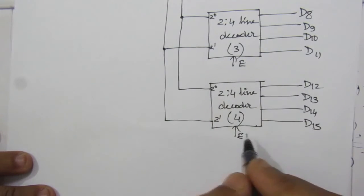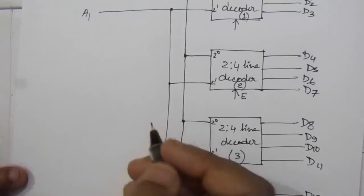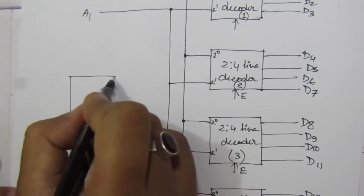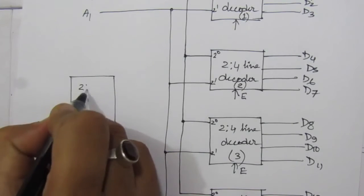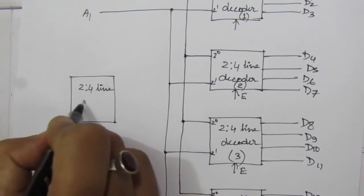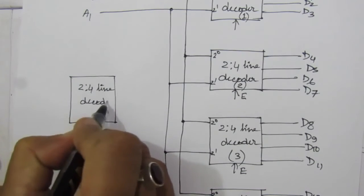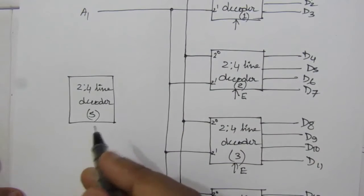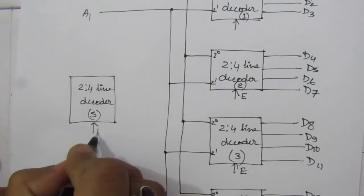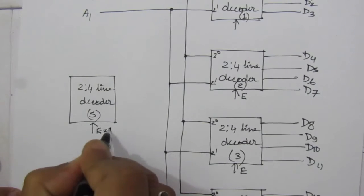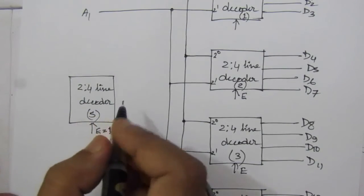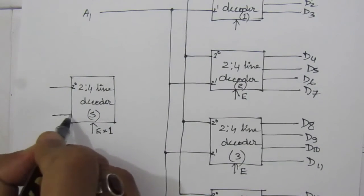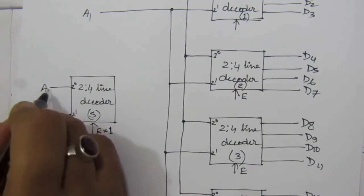These enable input lines will be controlled by another 2-to-4 decoder. This is the 5th decoder — a 2-to-4 line decoder. It will have an enable line where enable is always equal to 1, meaning this circuit will be performing at all times. Its inputs are 2 to the power 0 and 2 to the power 1, corresponding to A2 and A3.